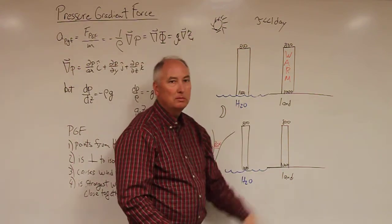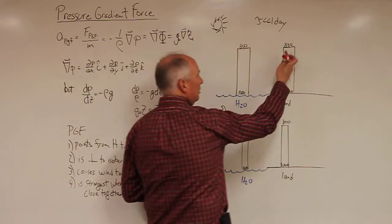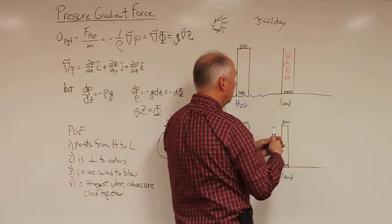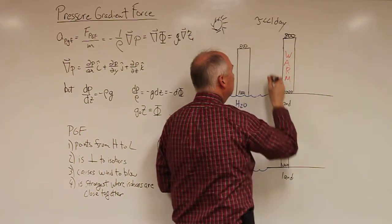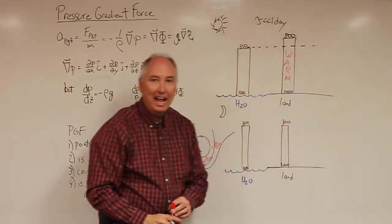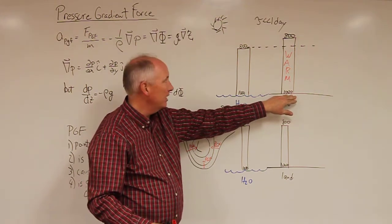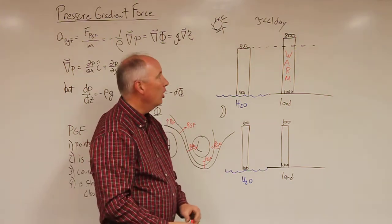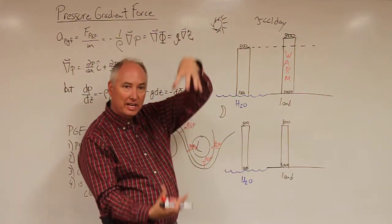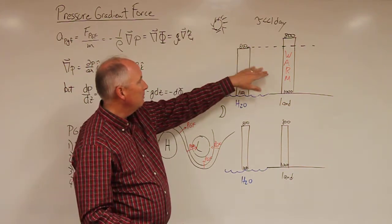The net result is that the column of air over the land is going to warm up faster than the column of air over the water. And as you warm this air column, it's going to expand. And so as it expands, it's going to move up that direction.